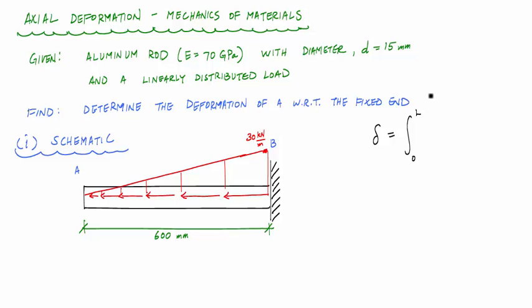The internal loading as a function of x divided by E, the modulus of elasticity of the material, over the cross-sectional area, integrated with respect to dx. This is the formulation we're going to use for axial deformation.